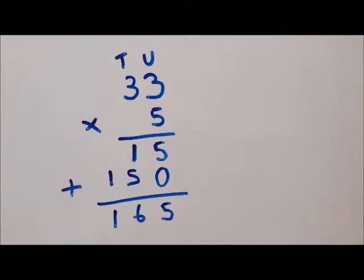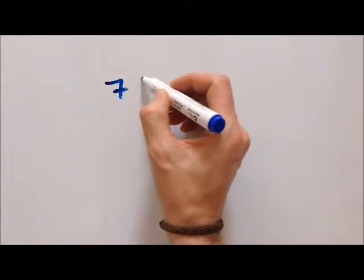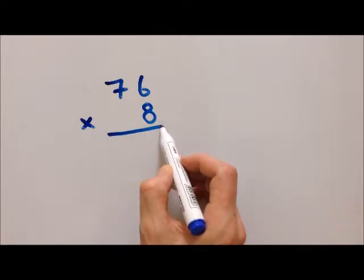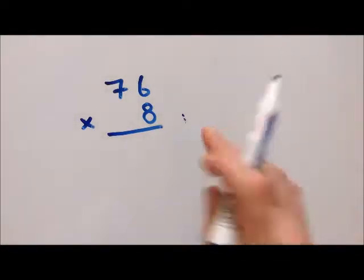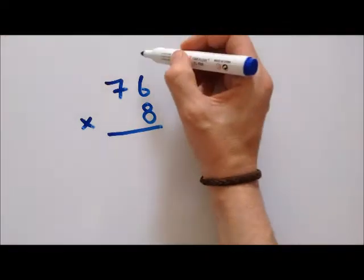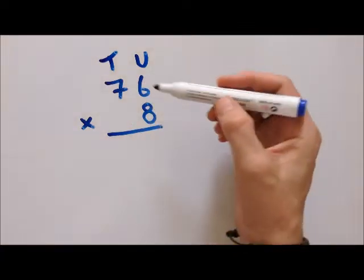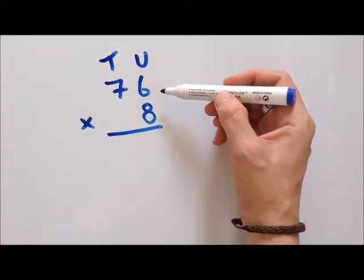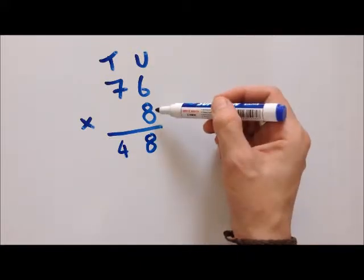Let's do that again with a bigger number. Let's try 76 times 8. This is why it's important to know our times tables. Let's put our columns in: eight times six is 48.